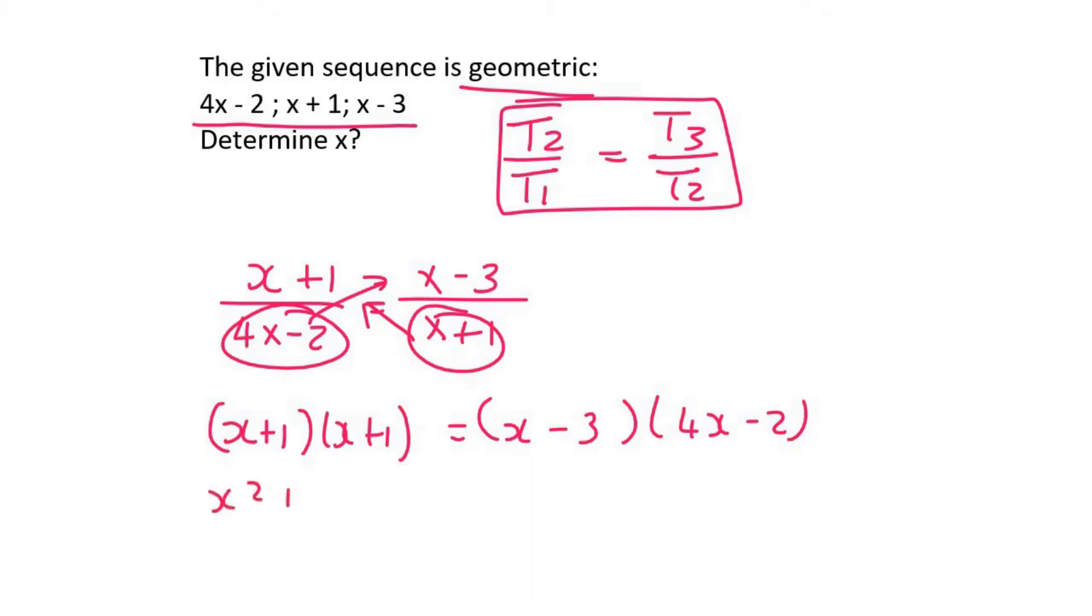We're then going to multiply out. I'm going to do it fairly quickly because you guys do know how to do this. I'm then going to take everything to one side, and then I would use the quadratic formula. And so we would find that x is 5 or x is a third.